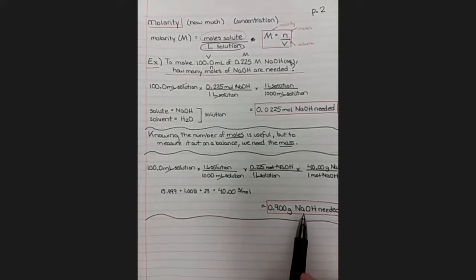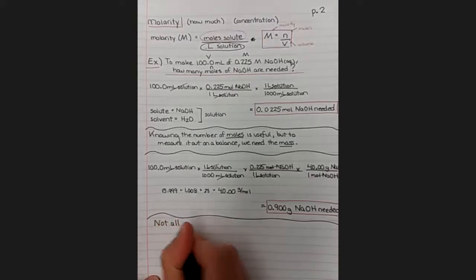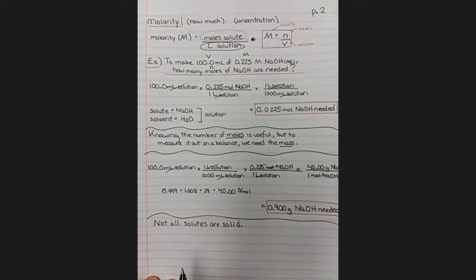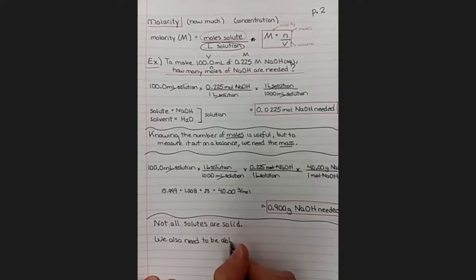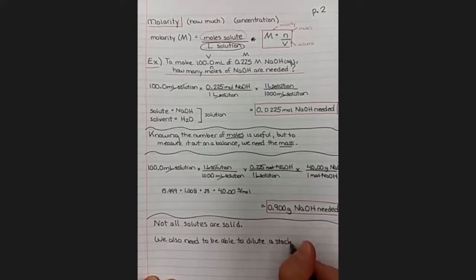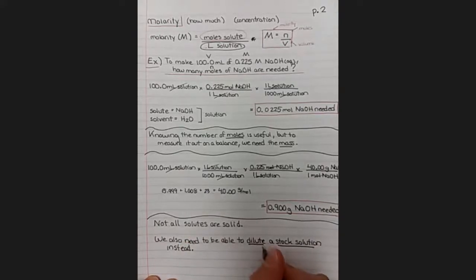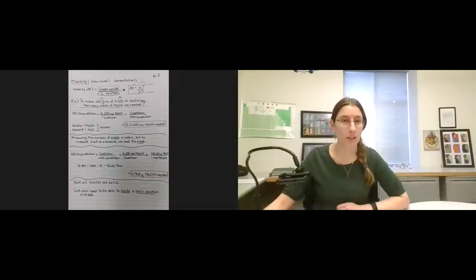So now we have the mass. So now we can actually make this because we know the mass and we know what volume we're trying to make, but this technique doesn't work for everything. Not all solutes are solid. For solids, awesome, very useful. Calculate the mass, no problem. But some solutes are liquid. And for liquids, we need a new plan. So for liquids, we are going to do something called a dilution from a stock solution. So we're going to start with a liquid and we're going to use it to make another liquid solution. So we will talk about dilution in the next video.